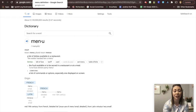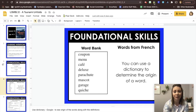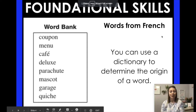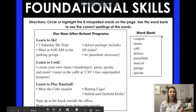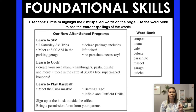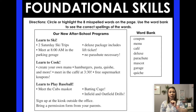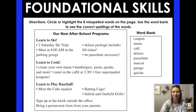That can be a really cool thing to figure out. For your foundational skills on Seesaw, you need to circle or highlight the eight misspelled words on the page, then use the word bank to see the correct spellings. You're looking for all the words — like the word coupon is in there somewhere but it's misspelled, so you need to find it and highlight it.